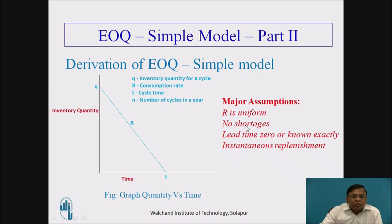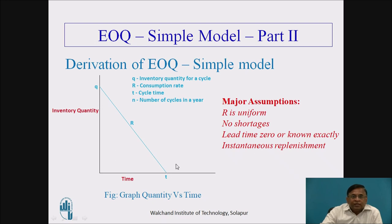Secondly, no shortages are permitted — if we consider C2 as shortage cost, that will be zero. Lead time is zero or known exactly. Additionally, there is instantaneous replenishment — that is, at the end of a cycle we assume that for the next cycle, quantity Q is available, meaning that at any point in time when we need the quantity raised to level Q, it is available.